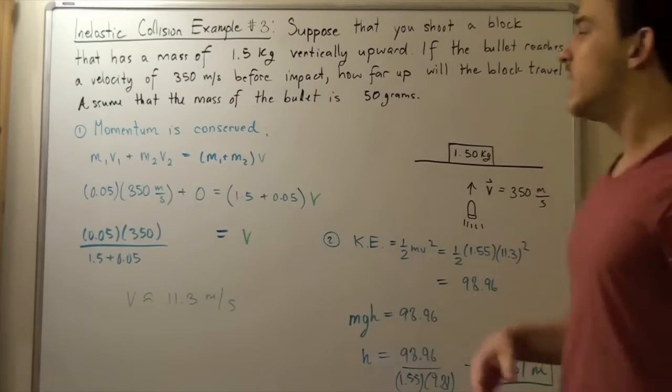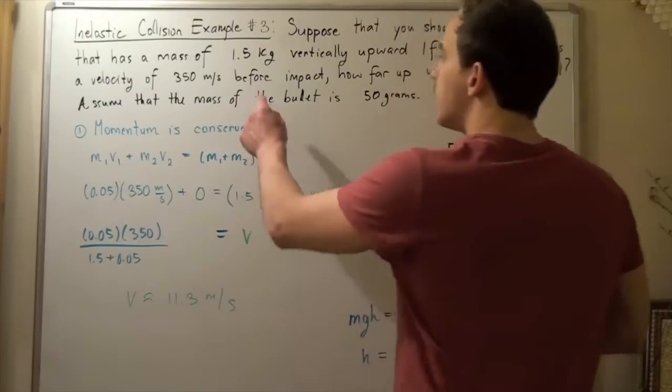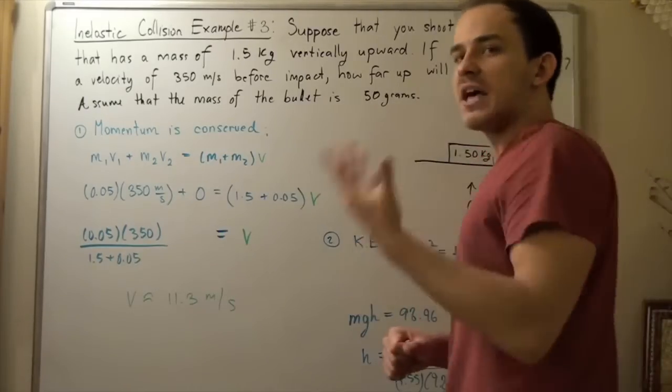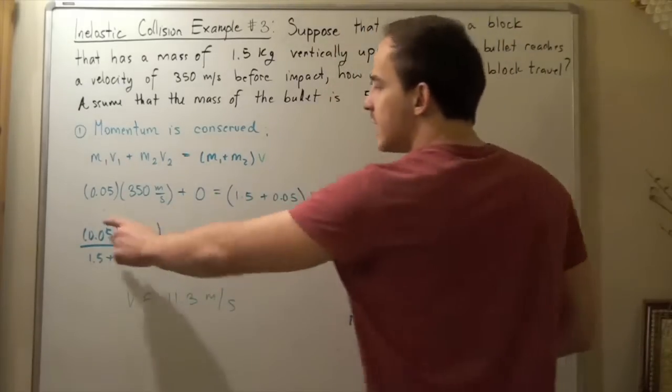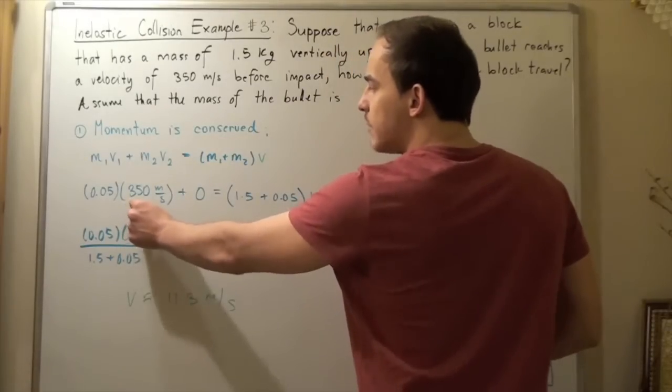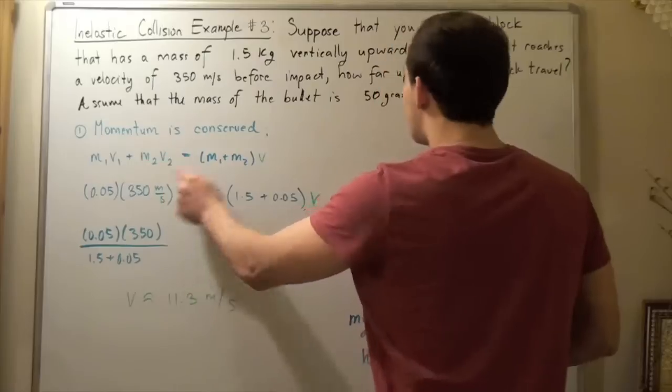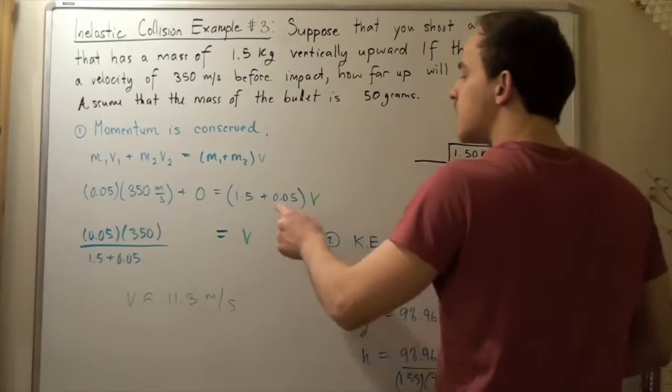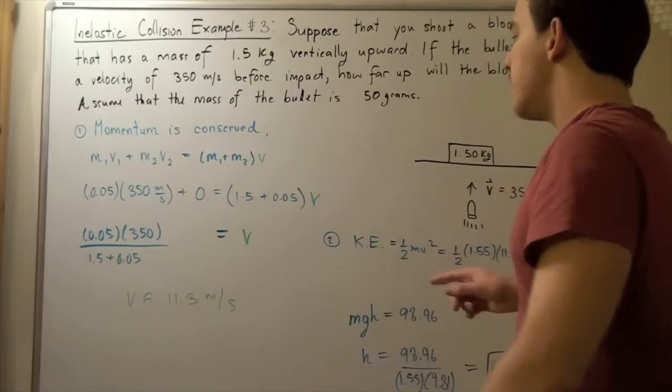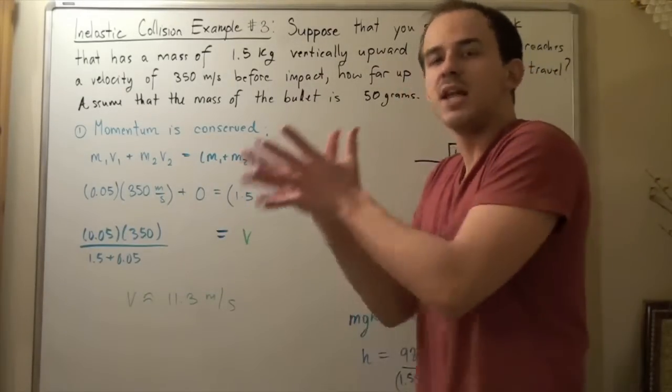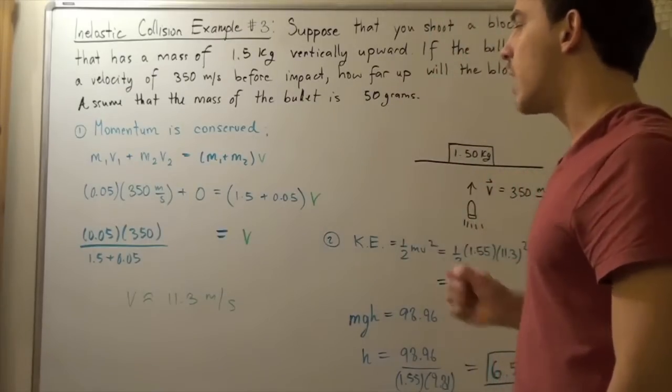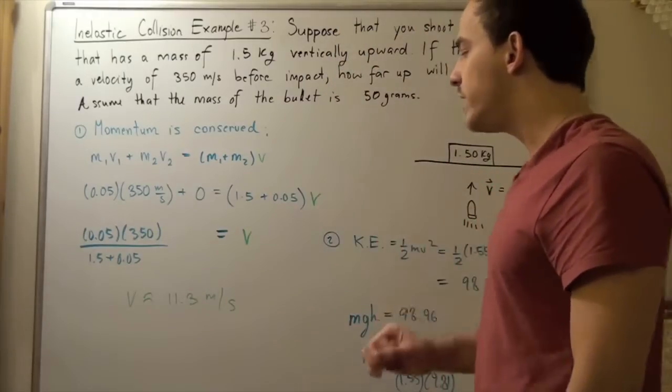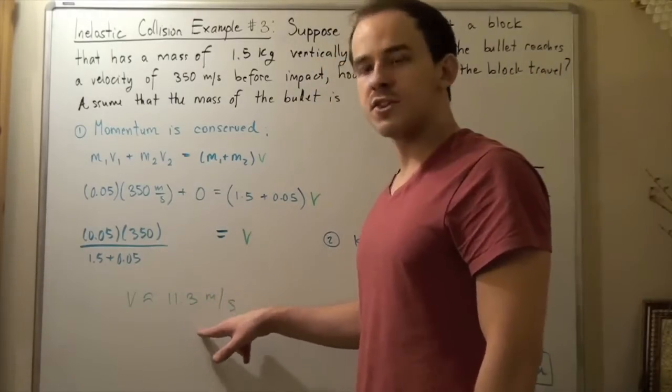Let's plug in our values. 50 grams is actually 0.05 kilograms because we divide by 1,000. The mass of the bullet is 0.05 kg multiplied by 350 m/s plus 0 (because the block's initial velocity is 0) equals (1.5 kg + 0.05 kg)v. Multiplying out and dividing by 1.55, we get approximately 11.3 meters per second.